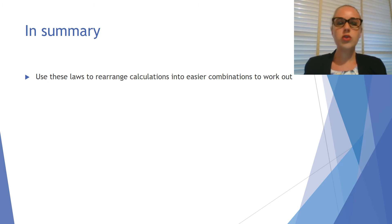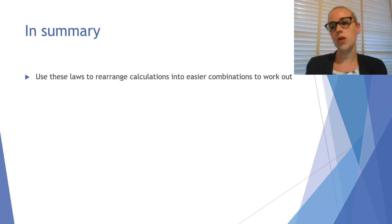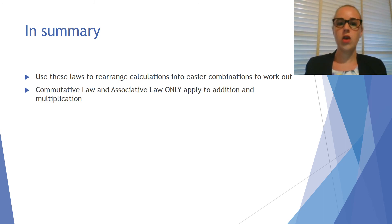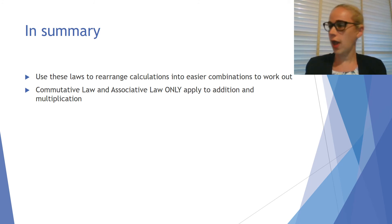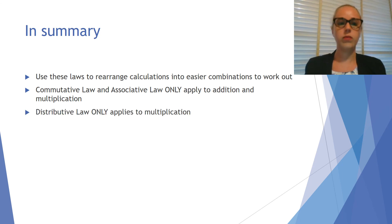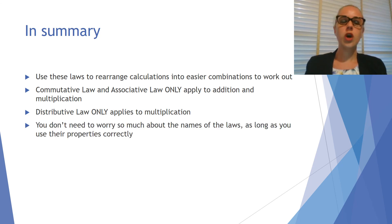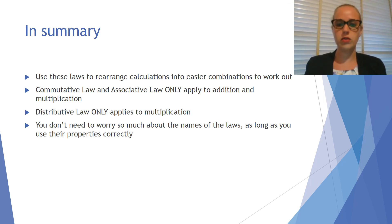In summary, you can use these laws to rearrange calculations into easier combinations. The commutative law and the associative law only apply to addition and multiplication — you cannot use them for subtraction, division, or any other operation. The distributive law only applies to multiplication. You don't need to worry too much about the names of the laws, as long as you're using their properties correctly when you apply your mental strategies.